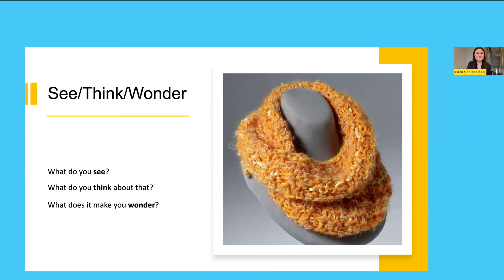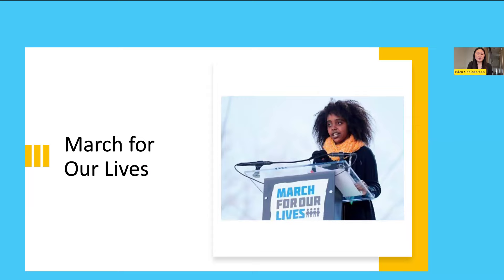On March 24th, 2018, Naomi Wadler delivered a speech at the March for Our Lives rally in Washington, DC, where she highlighted how African American women who are victims of gun violence do not receive the same level of media attention. She was 11 years old at the time. She originally wanted to wear an all-black outfit to reflect the seriousness of the protest, but her aunt Leslie Wadler thought Naomi looked too somber and needed some color. Orange is the color for the gun prevention movement, and her aunt knitted the scarf while watching two movies — nicknamed the 'two movie scarf' — which became Naomi Wadler's signature and a recognizable symbol of her activism.